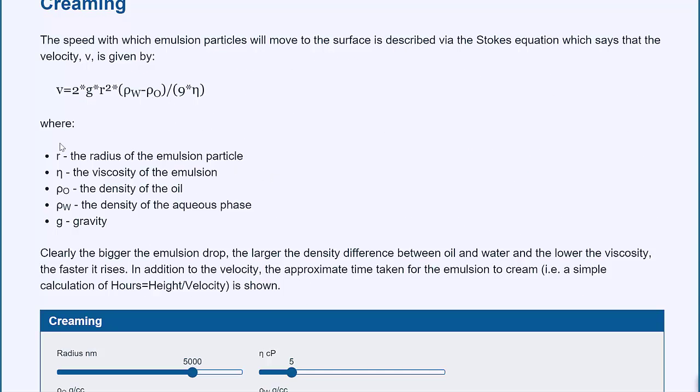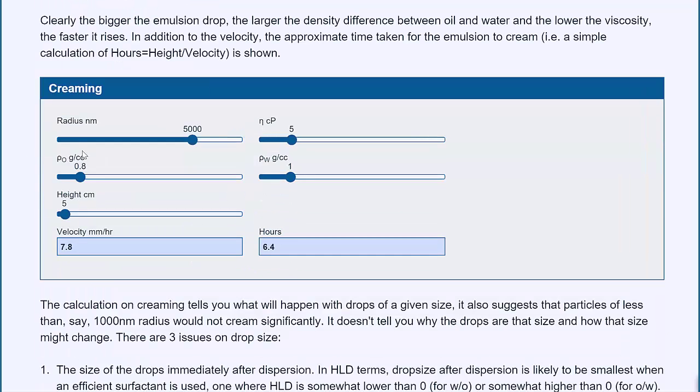There's the simple idea of creaming. The velocity at which the oil will rise to the surface depends on the Stokes equation, and you can just do that calculation. And it would take six hours for this particular thing. If I go to smaller drops, it would take 400 hours. And if I go to larger drops, it will happen very quickly. And it depends on the viscosity and the density difference.